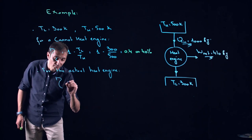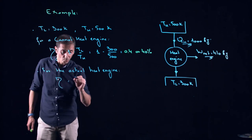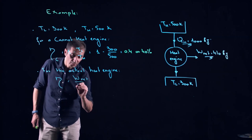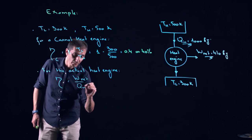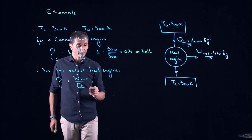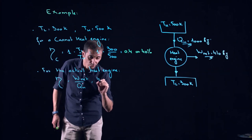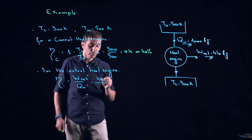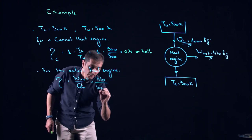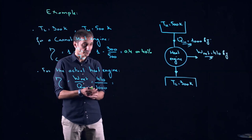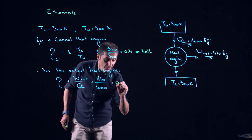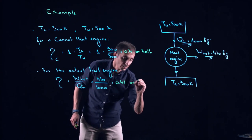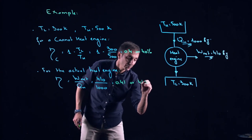We know that the thermal efficiency of any heat engine is the work net over our QN, right? Our work net is 410 kilojoules and our QN is 1000 kilojoules. This gives us 0.41 or 41 percent.